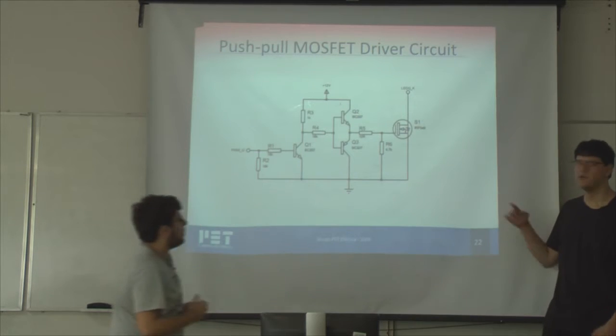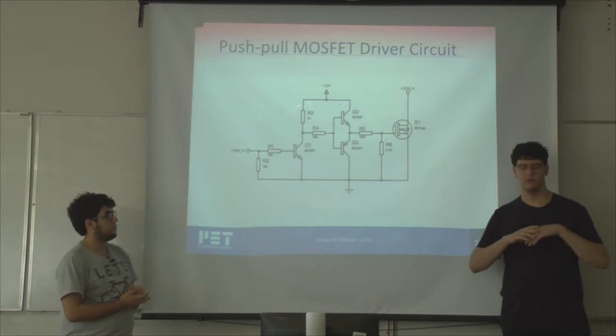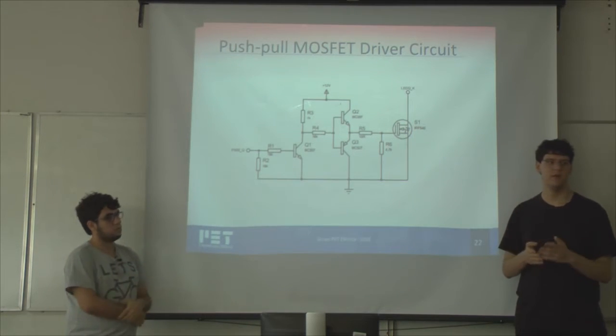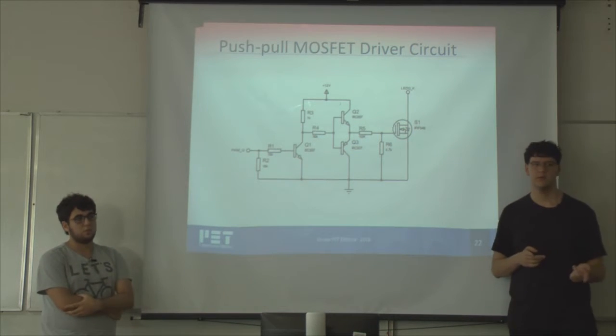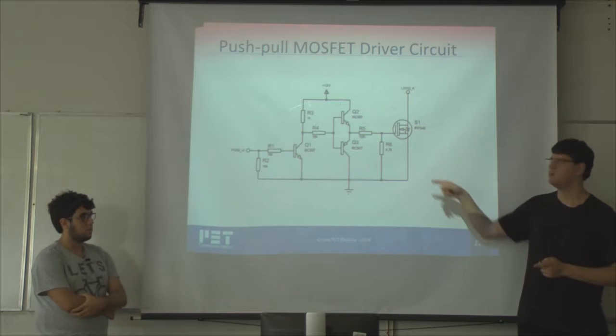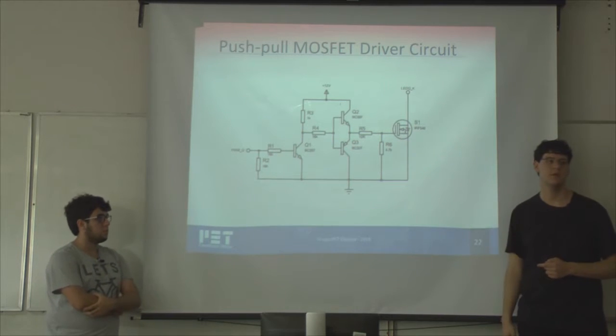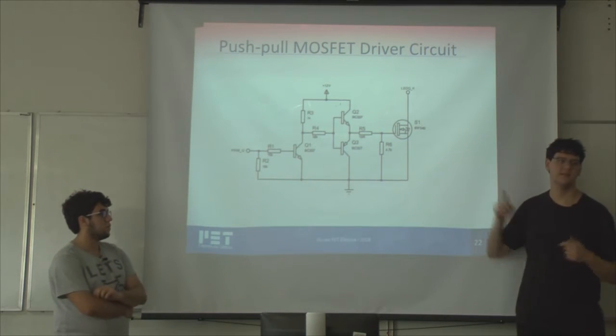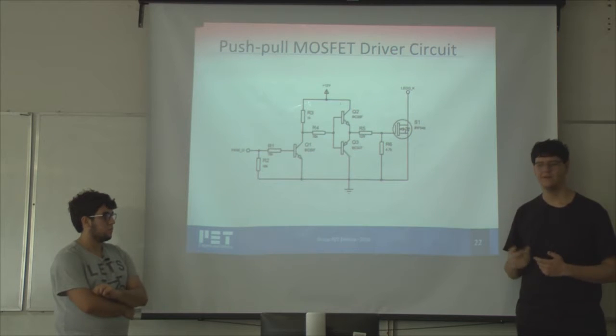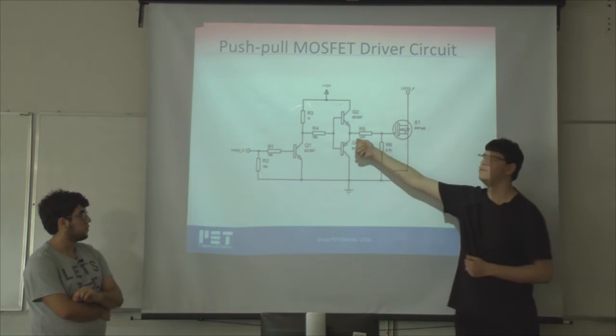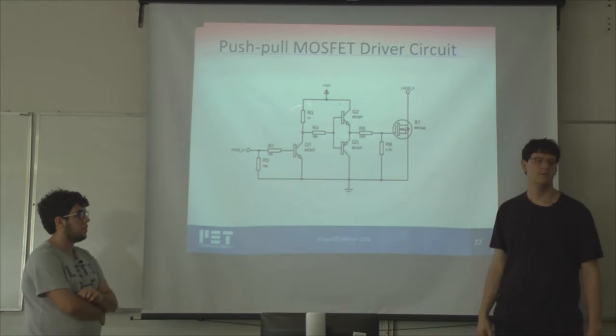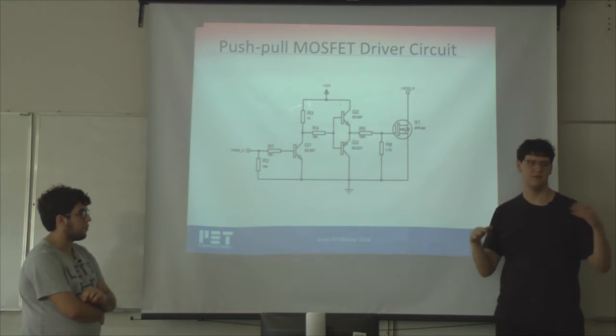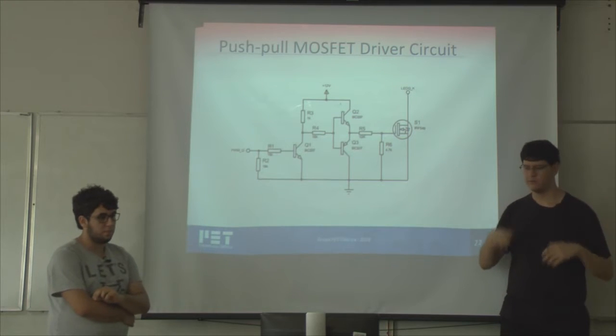We're doing this because the MOSFET, when you deal with it like a load, you can see it as a capacitive load. You need a transient current in its gate to turn it on. With power MOSFETs, this transient current can be quite high. That's why we use the push-pull circuit. It amplifies our current without damaging the waveform of the voltage.